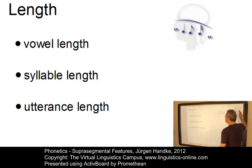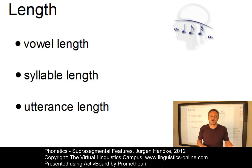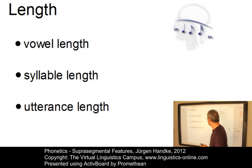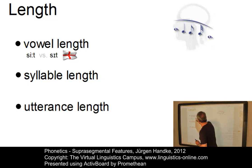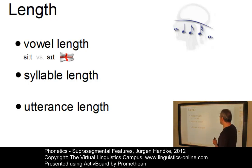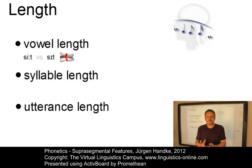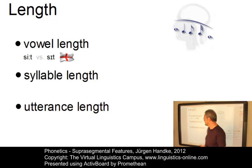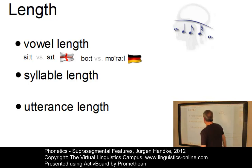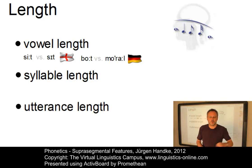Let's look at length next. The length of sounds, syllables, words, and even utterances is variable, and the variations are used for a variety of linguistic purposes. For example, vowel length occurs in British English: 'seat' versus 'sit.' However, the difference between 'seat' and 'sit' is not just one of length only — it is a combination of length and quality, because the two vowels have different positions on the cardinal vowel chart. In German, the distinction between 'Boot' (the boat) and 'Moral' is really only a matter of vowel length: the short O occurs in unstressed syllables and the long O in stressed ones.